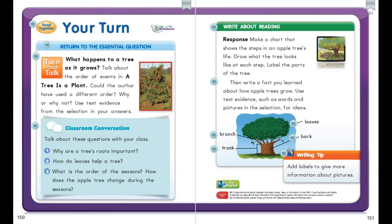Now we're going to return to the essential question. Pause the video and come back after you've had a discussion with your learning adult about all of the questions on page 150. You're going to talk about what happens to a tree as it grows, discuss those three questions, and then come back to the video.